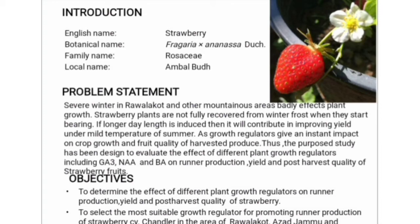Now I will share information about my research objectives. The first objective is to determine the effect of different plant growth regulators on runner production, yield and post-harvest quality of strawberry. The second objective is to select the most suitable plant growth regulator for promoting runner production of strawberry cultivar Chandler in the area of Rawalakot, Azad Jammu and Kashmir.